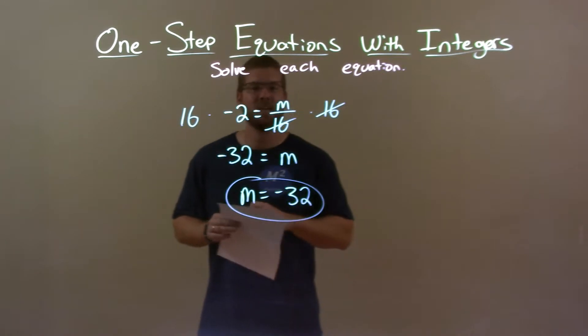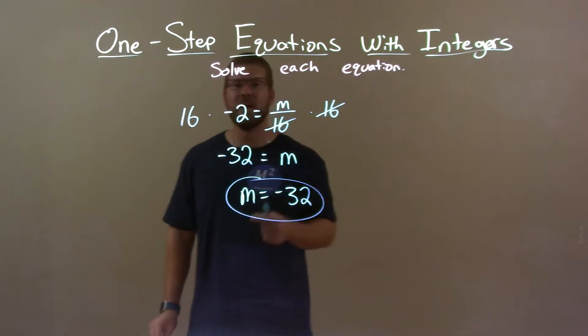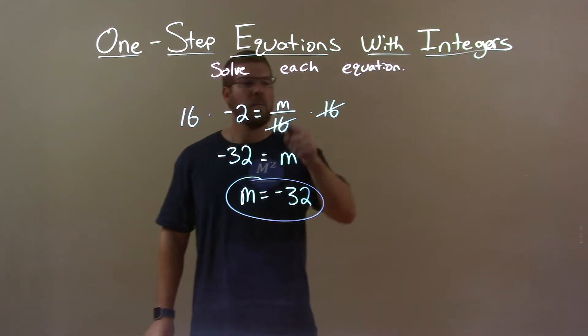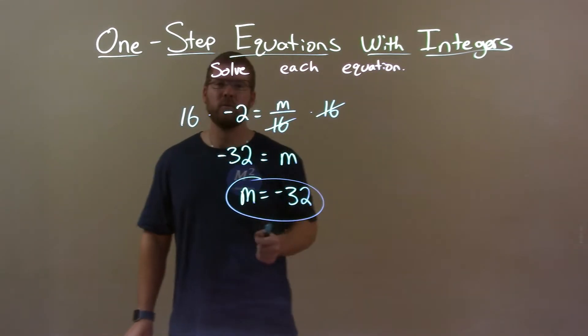Quick recap. We're given negative 2 equals m over 16, and we have to solve for m. Multiply both sides by 16. That gives me m by itself.